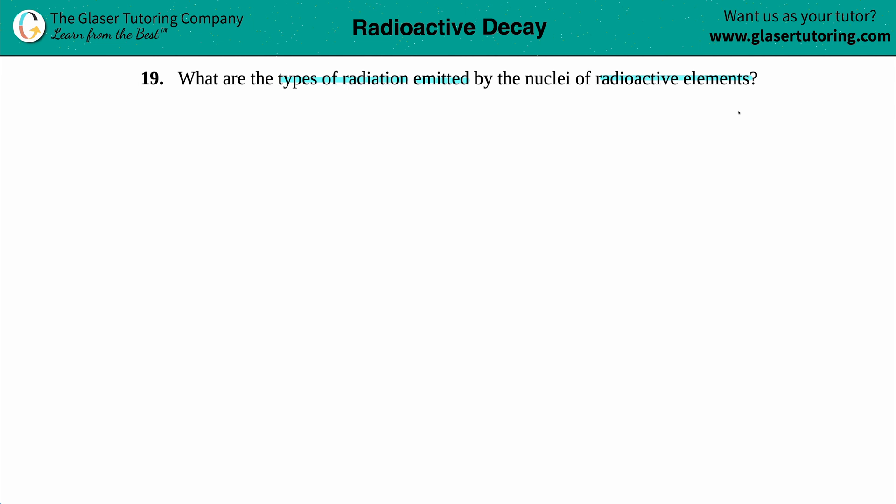Basically, this question is a concept question where we just want to list all the different types of radiation that can be possibly emitted by such radioactive elements. Now, if you are emitting something, you might see this word in your quizzes or tests in terms of maybe alpha emission, beta emission, positron emission.